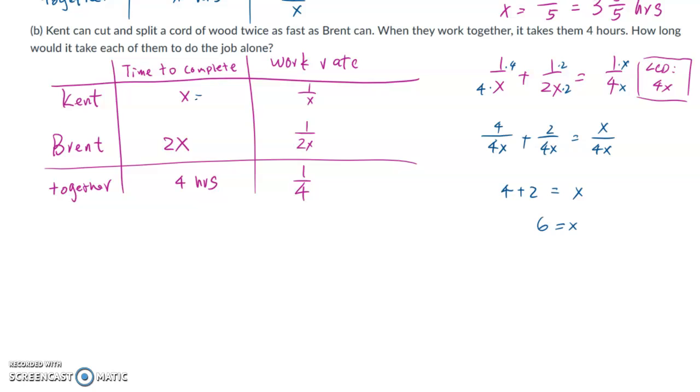Now let's make the top equal. That means 4 plus 2 equals X, so X is 6, which makes sense. It will take Kent 6 hours to complete the work and Brent 12 hours to cut the wood. So that's the answer to the problem, and I hope you find this video helpful. I will see you in the next video.